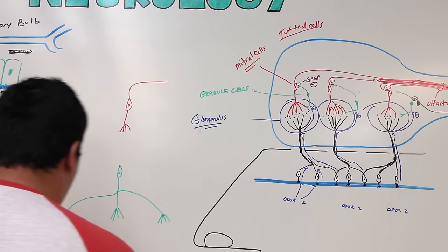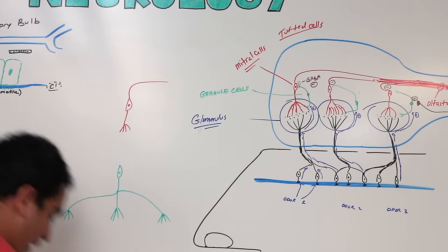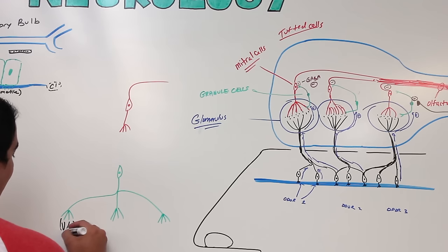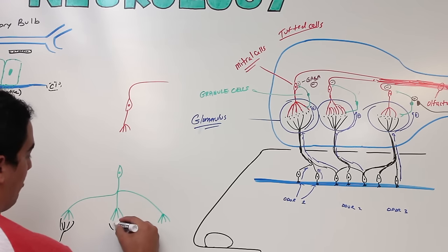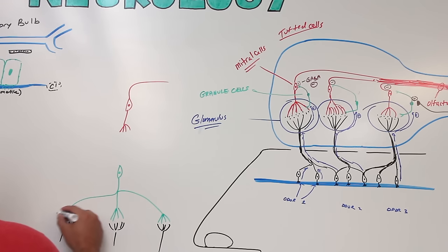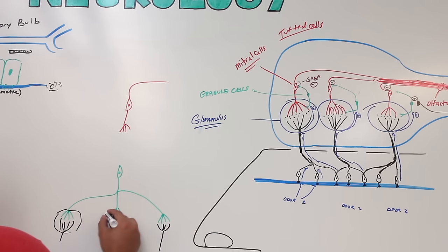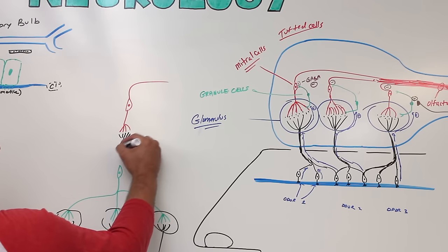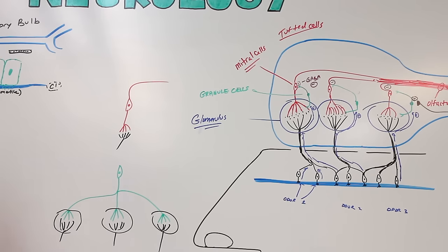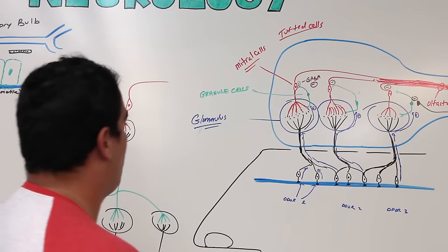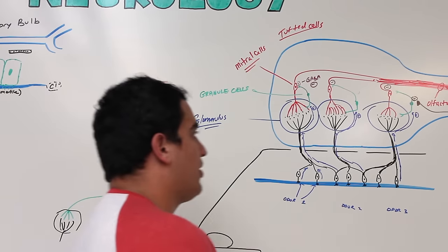So that's the key difference — a tufted cell has extensions going to many different glomeruli, whereas the actual mitral cell only has extensions coming to one glomerulus. That's a somewhat important distinction about the tufted cells.